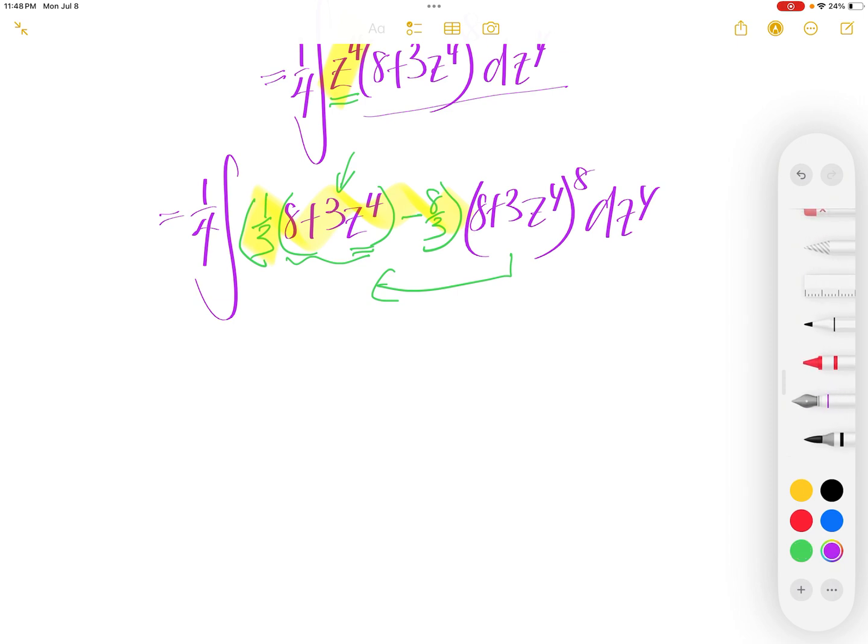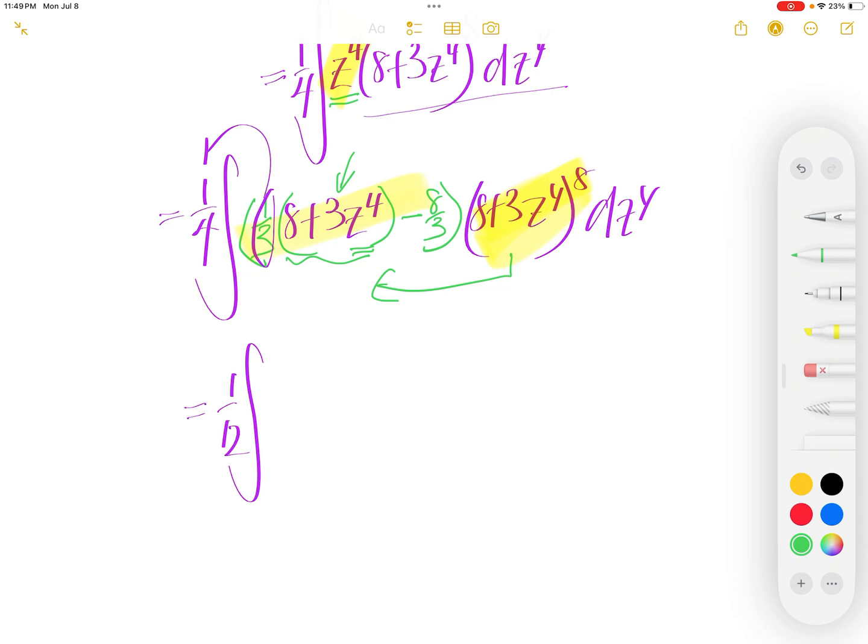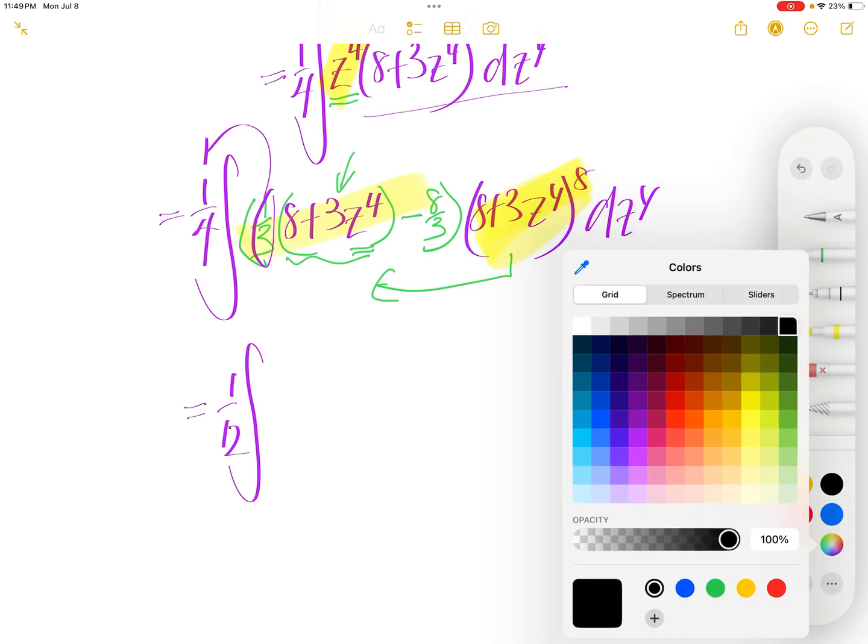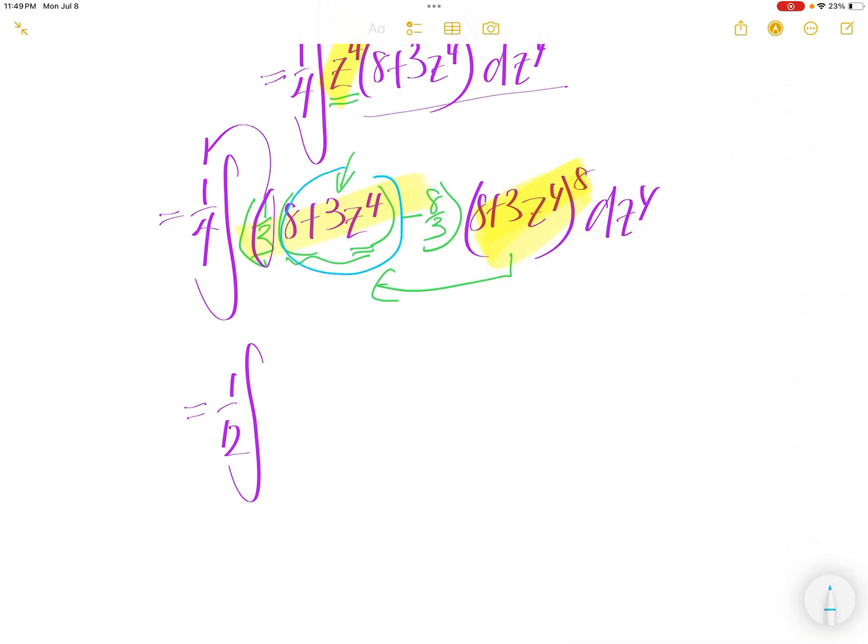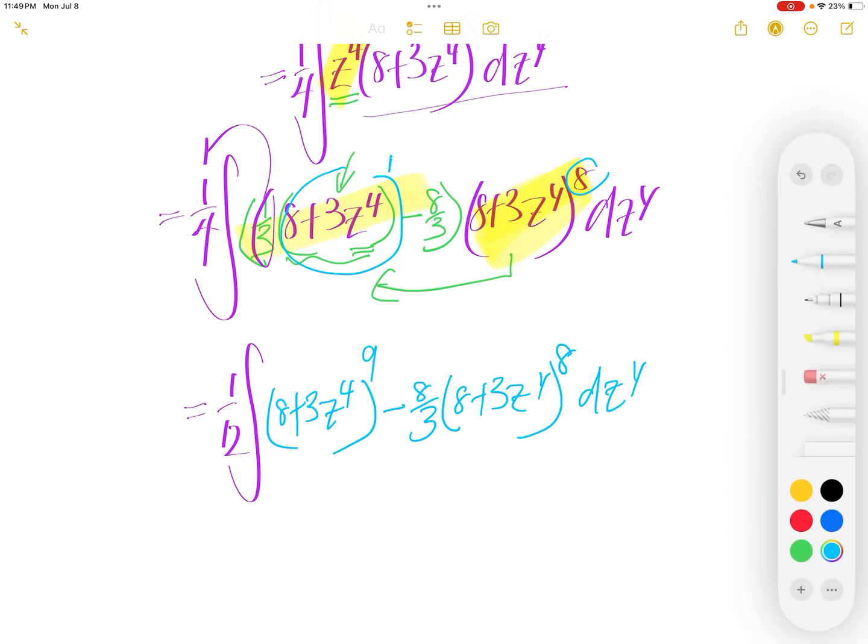Now, let us distribute this into here. You are going to get 1 quarter. Let us move this one third out. So, 1 third and 1 times 1 quarter, you will get to 1 over 12. Then, we are going to distribute this piece to here. This piece will get you 8 plus 3z to the power of 4 to power of 1 here, and 8 to the power of 9. Minus 8 over 3, 8 plus 3z to the power of 4, to power 8, dz to the power of 4.